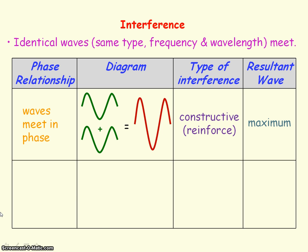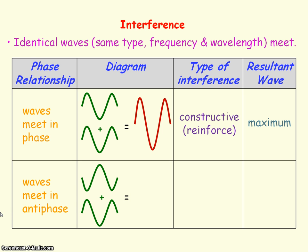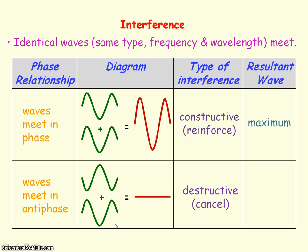Another special case of interference is when the waves meet in antiphase, so there's a half cycle difference between the waves. When one wave is at its trough the other will be at its peak, and vice versa. The resulting waves cancel out, so we say this is destructive interference.